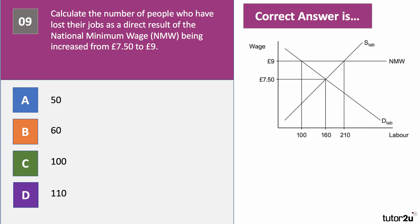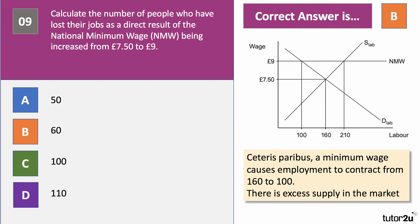Question nine is about the labour market. Calculate the number of people who have lost their jobs as a direct result of the minimum wage being increased from £7.50 to £9. The answer to question nine is B. The minimum wage going from £7.50 to £9 causes labour demand — in other words the level of employment — to contract from 160 to 100. There is excess supply, but the question is about the loss of jobs, which is 60.